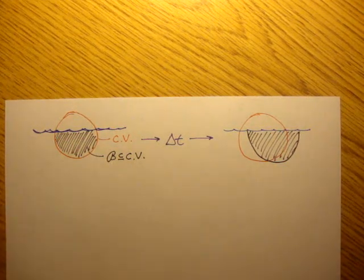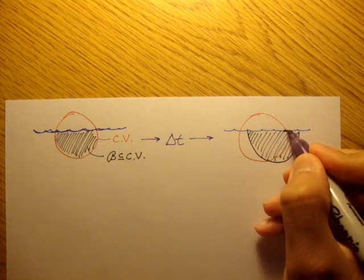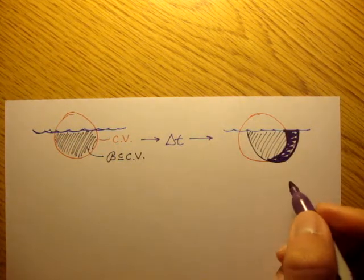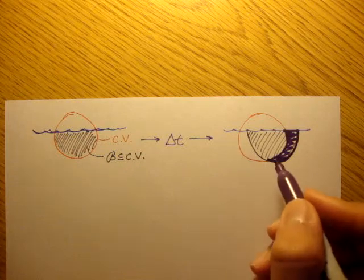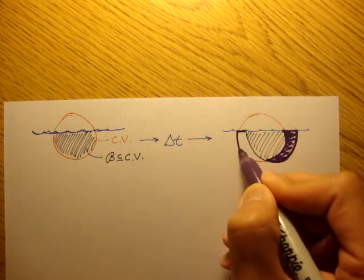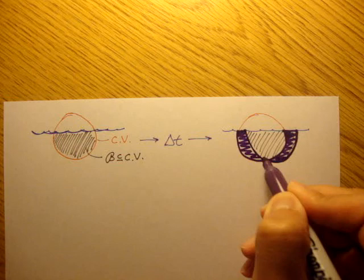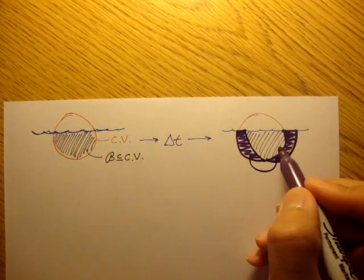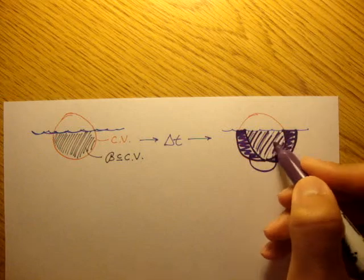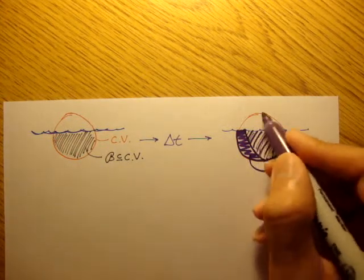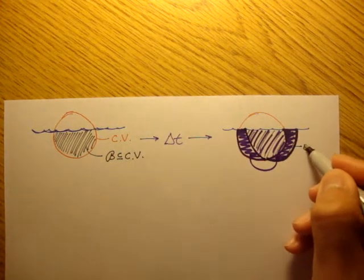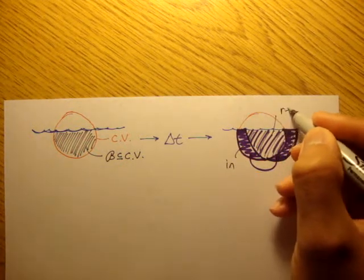Now, in that control volume, there are a couple of things going on. This mass here — in the thicker purple — this mass left the control volume after a change in time. But in order for the mass in the control volume to stay constant, there's another piece of mass that came into the control volume. And those two masses are equal — whatever goes out must come in. And then you also have the mass that's still remaining — the old stuff still remaining inside the control volume.